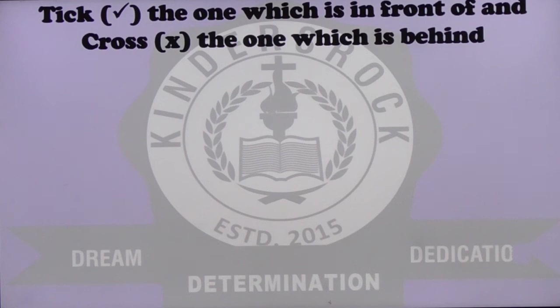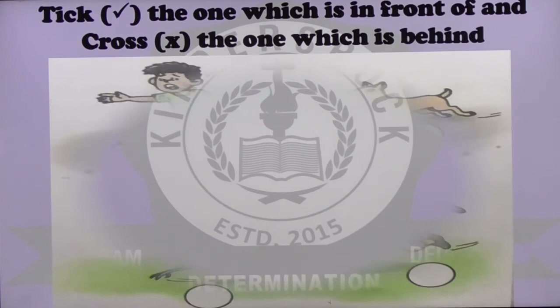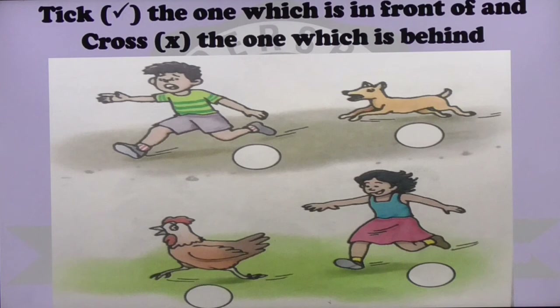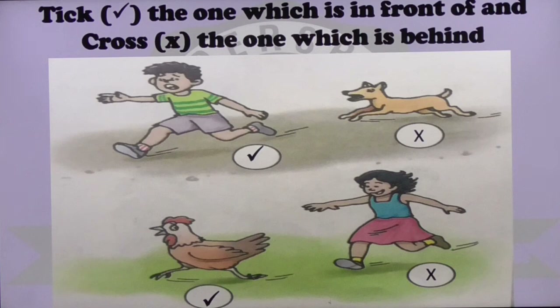Tick the one which is in front of and cross the one which is behind. There we have two sets of pictures — a boy and a dog running after the boy. Who is in front? The boy is in front. And who is behind? The dog is running behind the boy and the girl is running behind.